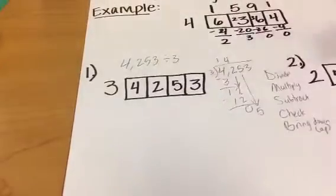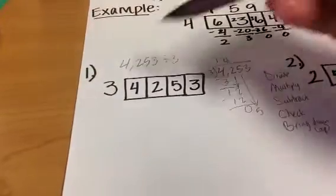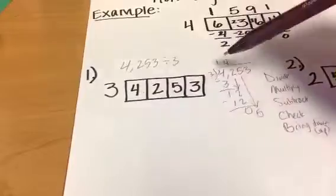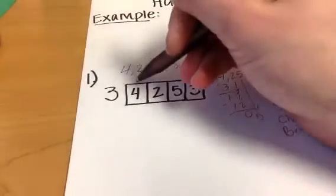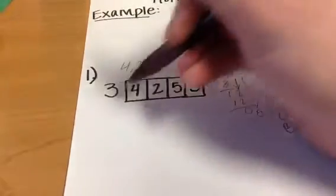This is the box method. It's basically just breaking it up a little more organized for the kids. So in this case, we're still doing how many times does 3 go into 4? Just like we did over here. So 1 time. And then we write that down.